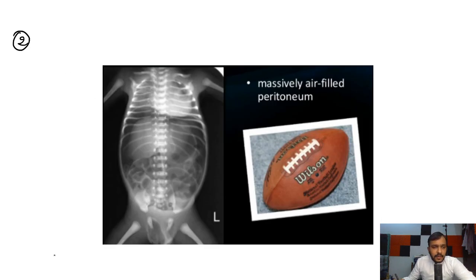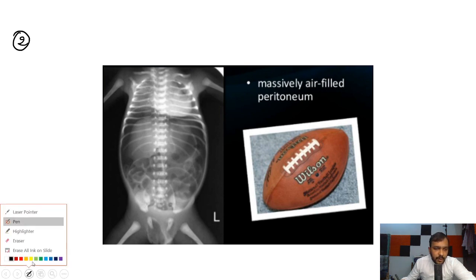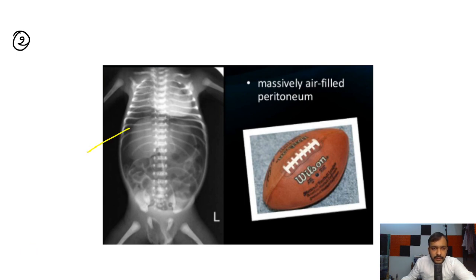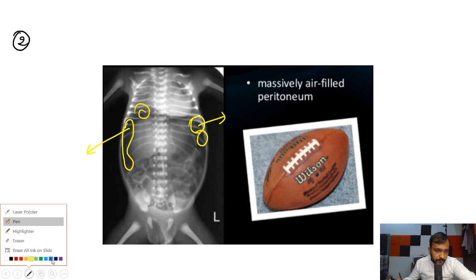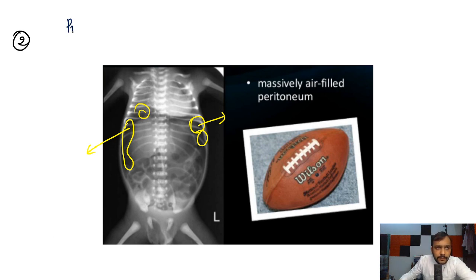In this image, this is an AP radiograph of the abdomen and you can see air in the peritoneal cavity — you can see this translucency. This is air in the peritoneal cavity and it is seen in pneumoperitoneum.